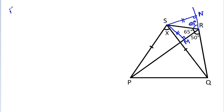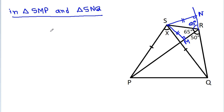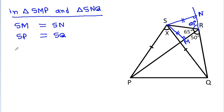Now in triangle SMP and triangle SNQ, we have SM equal to SN, SP equal to SQ, and angle SMP equal to angle SNQ, that is 90 degrees.